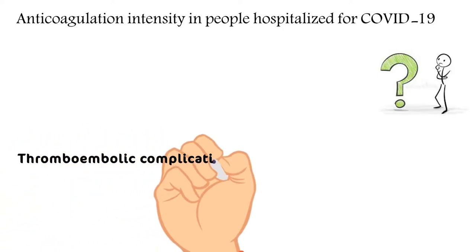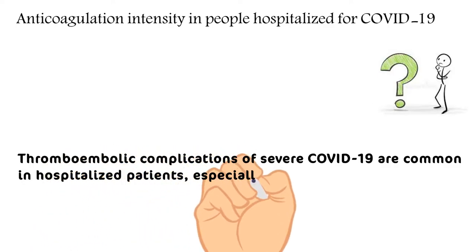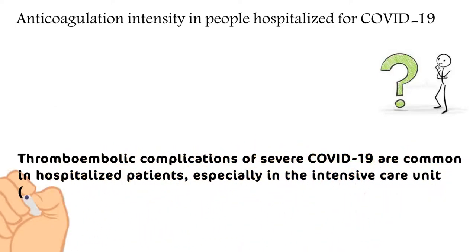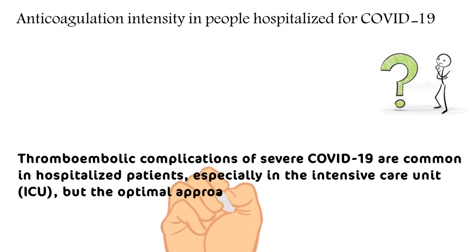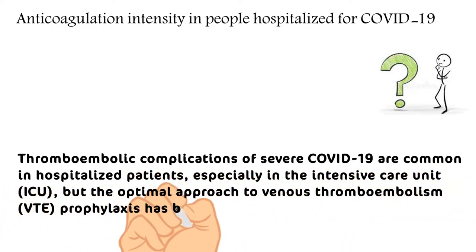Thromboembolic complications of severe COVID-19 are common in hospitalized patients, especially in the intensive care unit (ICU), but the optimal approach to venous thromboembolism (VTE) prophylaxis has been unclear.